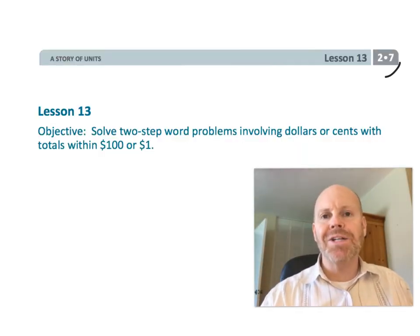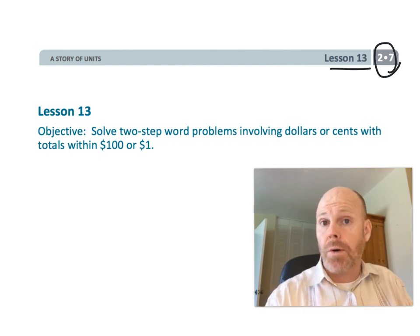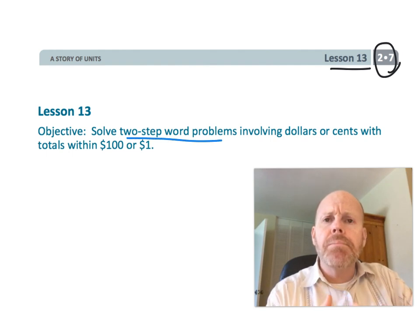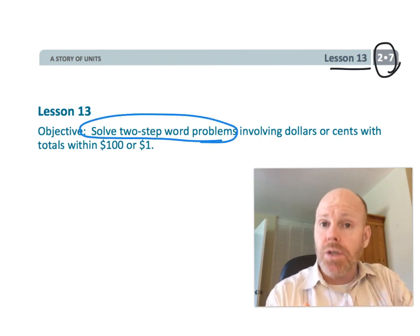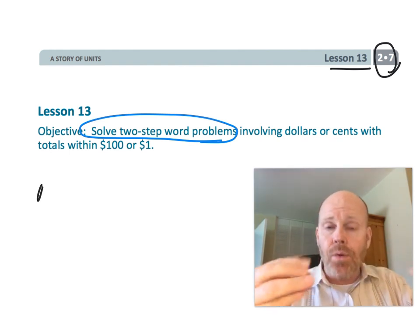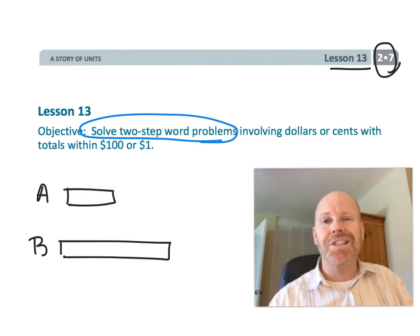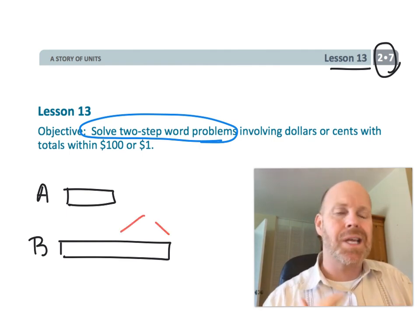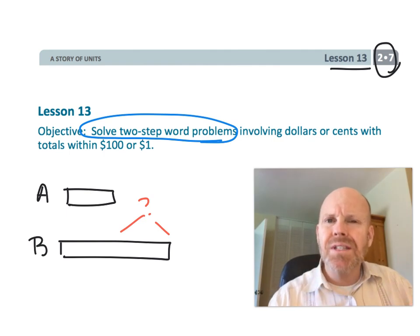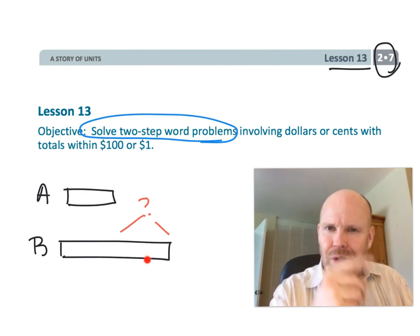All right, this is second grade module 7 lesson 13. In this lesson students are going to be solving word problems, but they're going to be doozies - two-step word problems. That makes it really important that we teach our students how to draw their thinking out using tape diagrams. So parents and teachers, this video is really going to focus not so much on the mathematics, which is the arrow model or standard algorithm of subtraction, but really on drawing those tape diagrams. So let's get started.